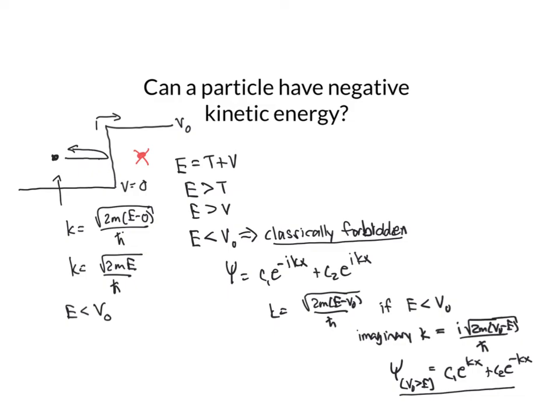And that wave function tells me that there is a probability, because ψ² is finite, there is a probability that the particle will be in the region where it would be classically forbidden.